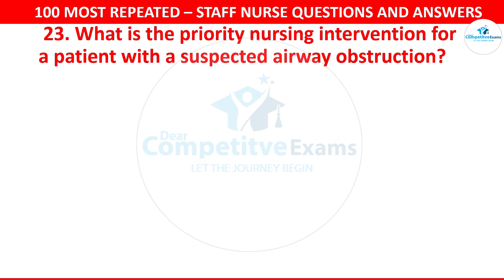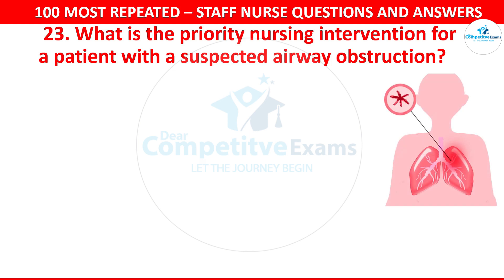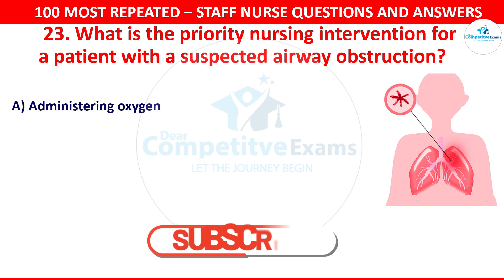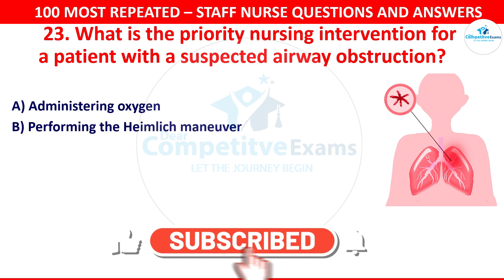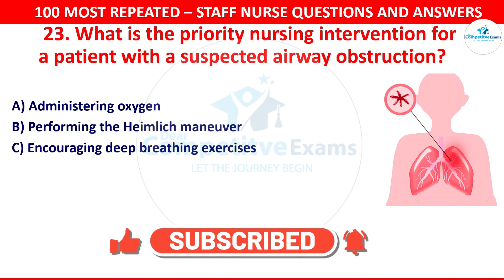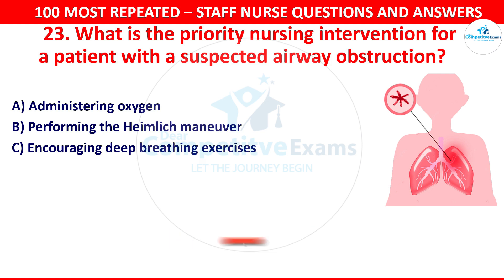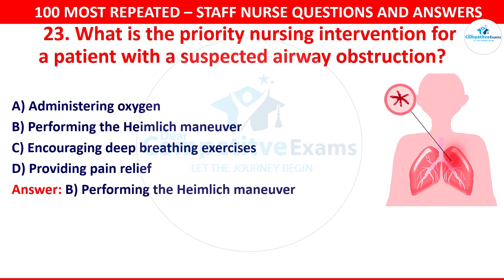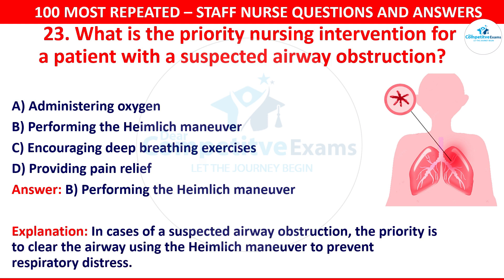Question 23. What is the priority nursing intervention for a patient with a suspected airway obstruction? Your options are administering oxygen, performing the Heimlich maneuver, encouraging deep breathing exercises or providing pain relief. The correct answer is performing the Heimlich maneuver. In cases of a suspected airway obstruction, the priority is to clear the airway using the Heimlich maneuver to prevent respiratory distress.